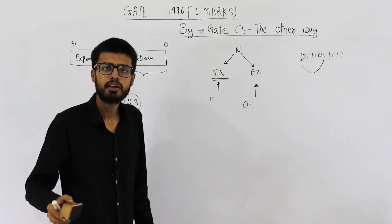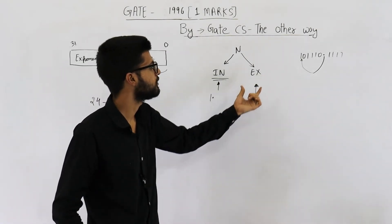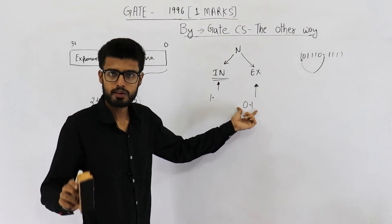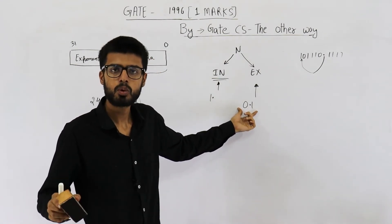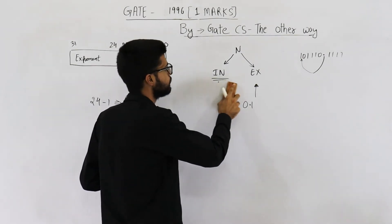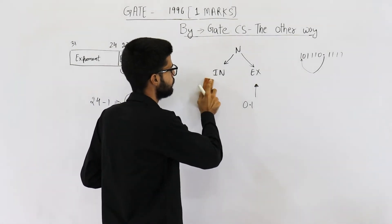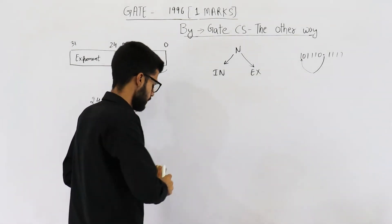Now, in this question, we are talking about explicit normalization, because they haven't mentioned anything. Moreover, the options make it clear.